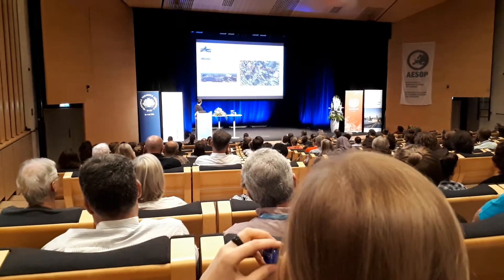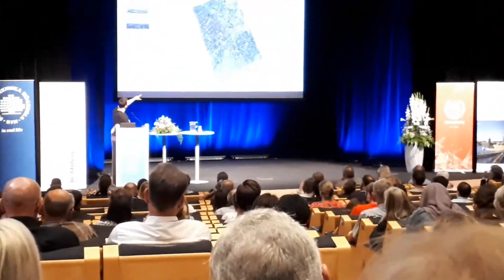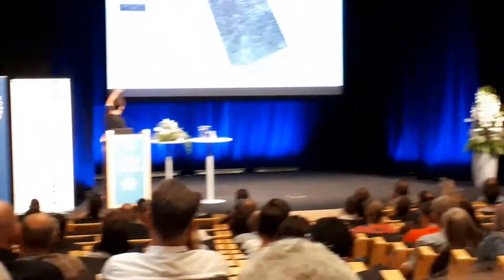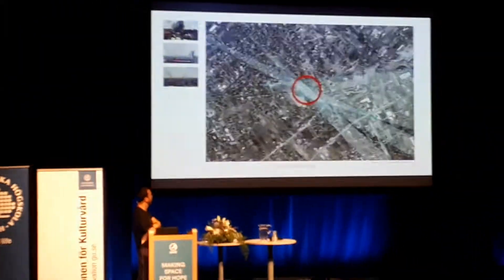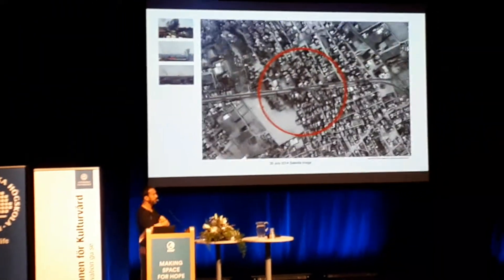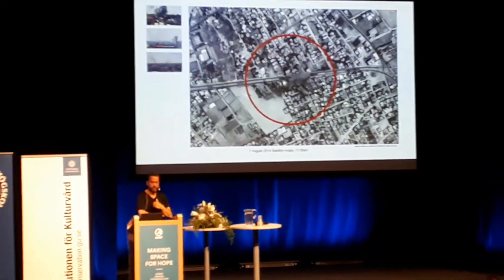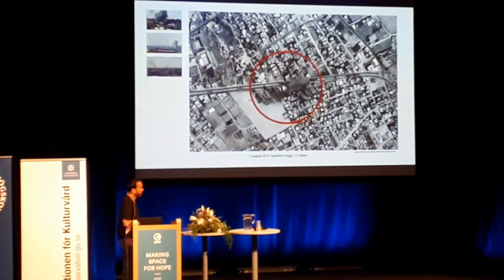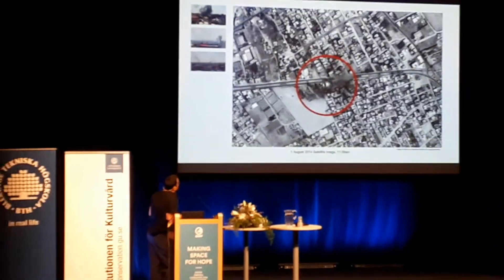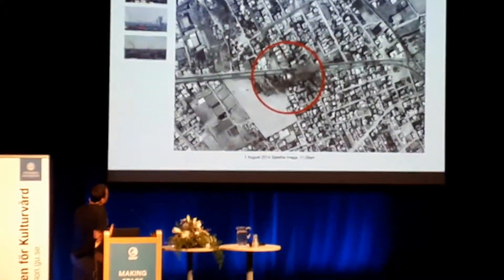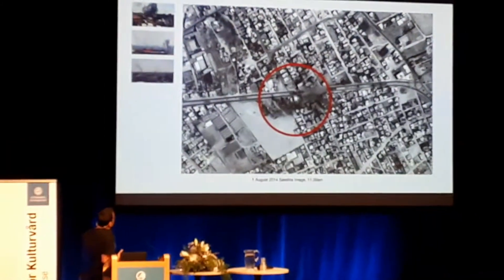We determine where the cloud is in the image, then do the same to two others, and in that way we can find where the bomb landed — that cloud we've seen before. Now we know where it is, and we look at satellite images before and after to establish where it landed.